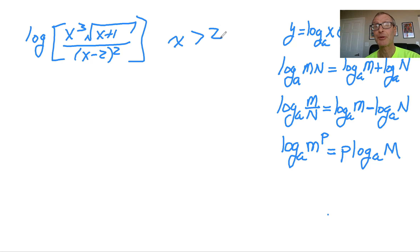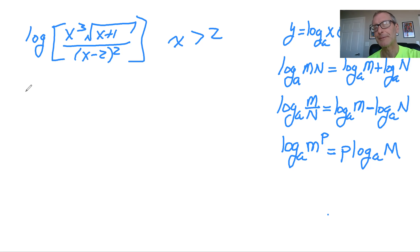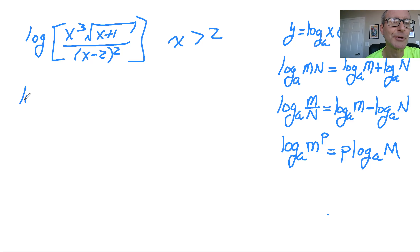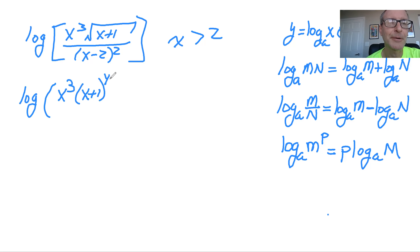I typically get rid of the roots first. What I like to do is rewrite the square root in fractional exponent form so we can use the power rule at the end — that's what you typically do, power rule at the end. So rewrite it as: (x plus 1) to the one-half power, divided by (x minus 2) squared.